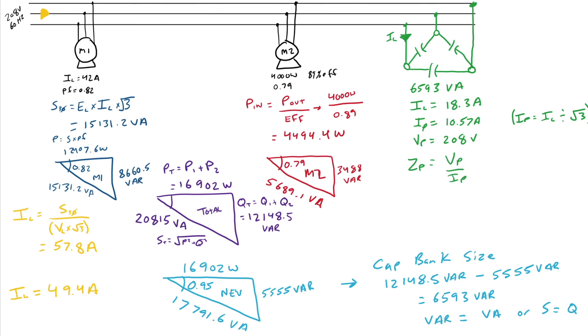So, I'm going to take that. So, I get 208 volts divided by, again, phase values, 10.57 amps. It gives me a Z of 19.68 Ohms.